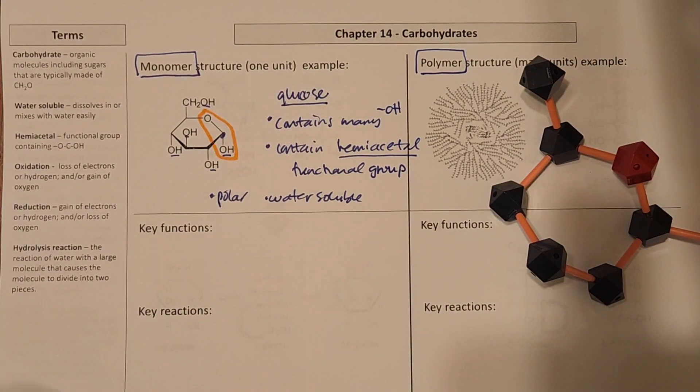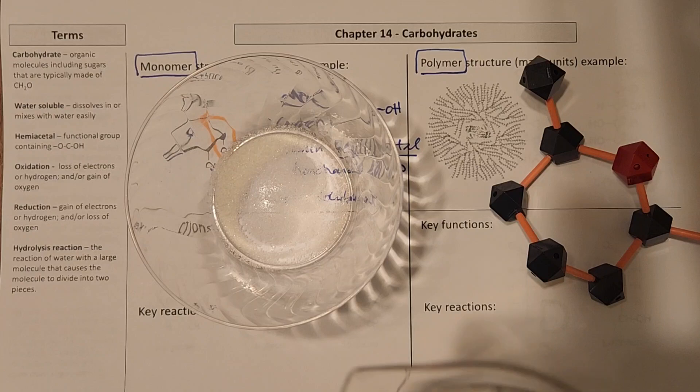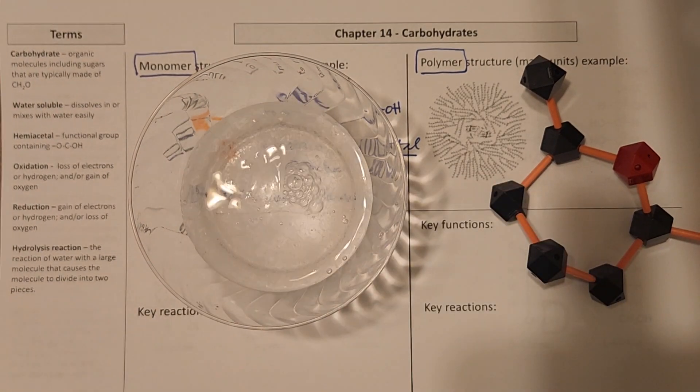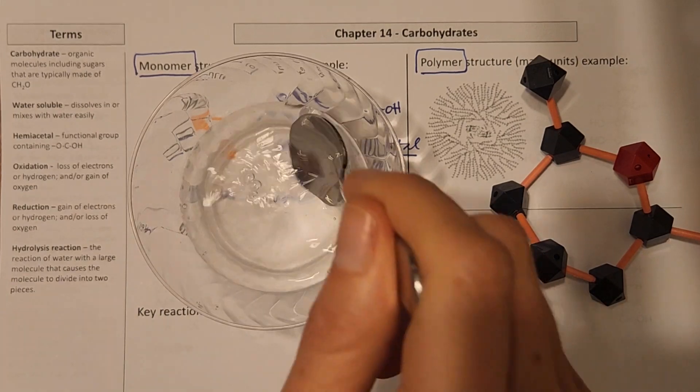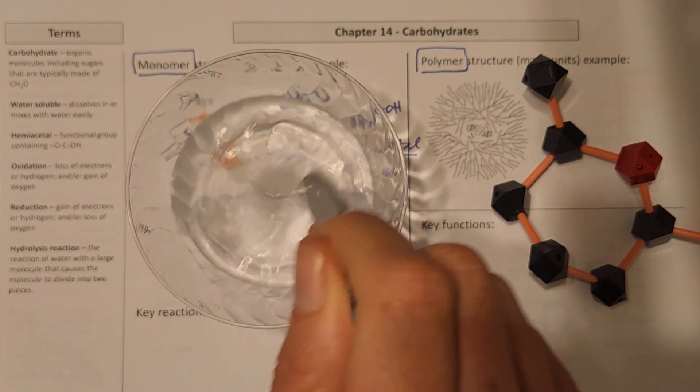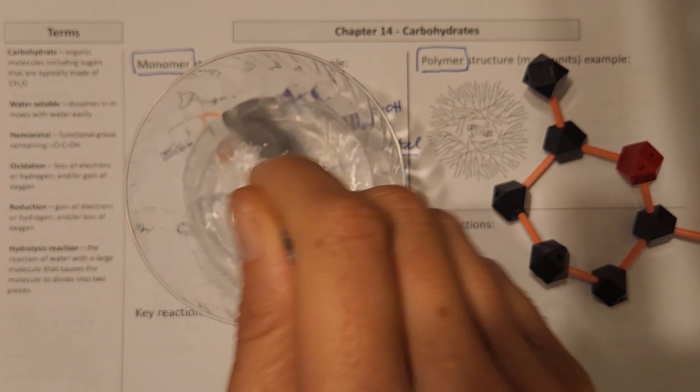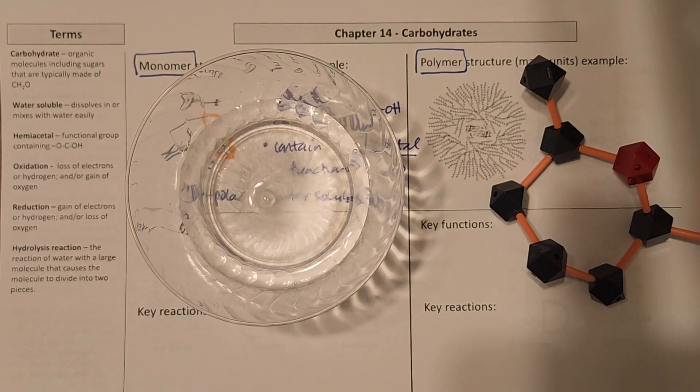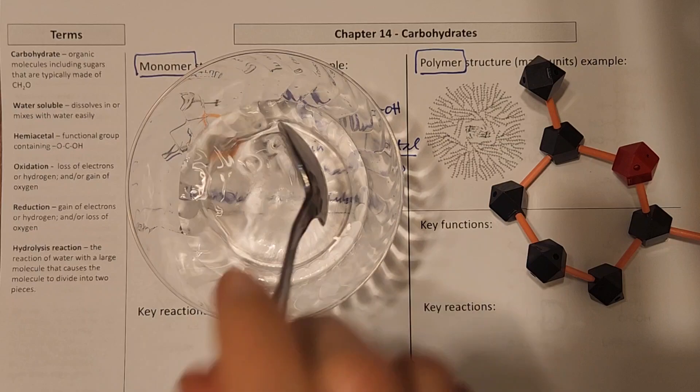And so just to illustrate that water solubility for you, here is some table sugar. And if I add some water to that, all of those hydroxyls are going to hydrogen bond with the water. And you can see that almost instantaneously, this is going back to transparent. There's a bit of sugar there at the bottom.